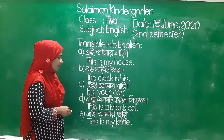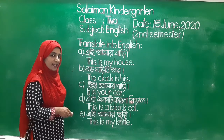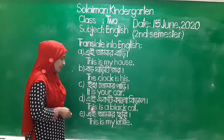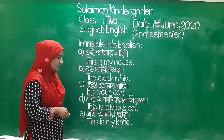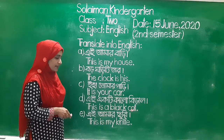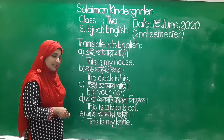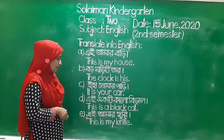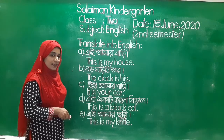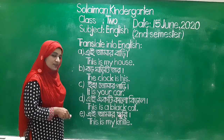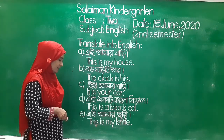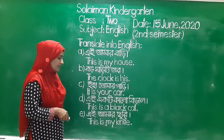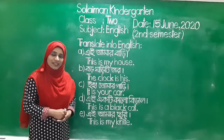Number D: This is a black cat. This is a black cat. Number E: This is a black cat. My class students, you know.